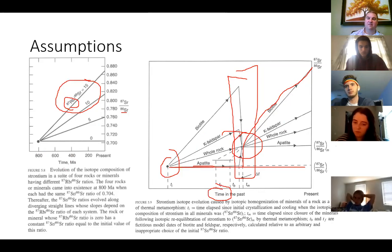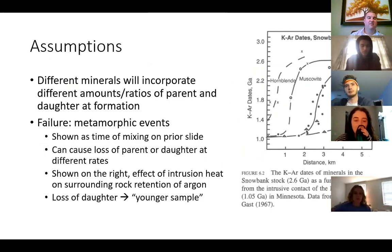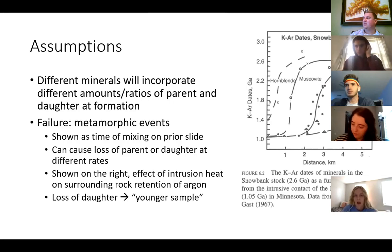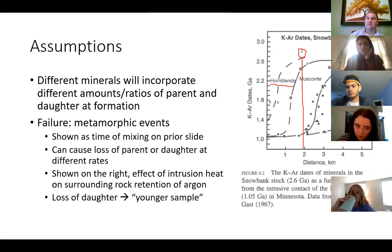Because different minerals incorporate different amounts or ratios of the parent and daughter at formation, you might not necessarily have constant amounts in all your minerals, especially of the daughter. Metamorphic events can also cause these to fail. Here is the Duluth Gabbro in Minnesota — these different minerals have different melting points. The mineral with the highest melting point is going to give you the best age close to wherever this metamorphic event occurred.